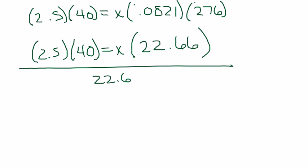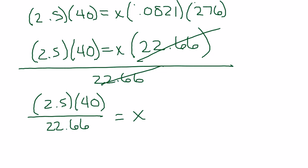So we'll have 2.5 times 40 divided by 22.66. This cancels over here, so that equals x. If we go ahead and calculate that out on the left side, we have 2.5 times 40 divided by 22.66. So we should get 4.41 equals x.